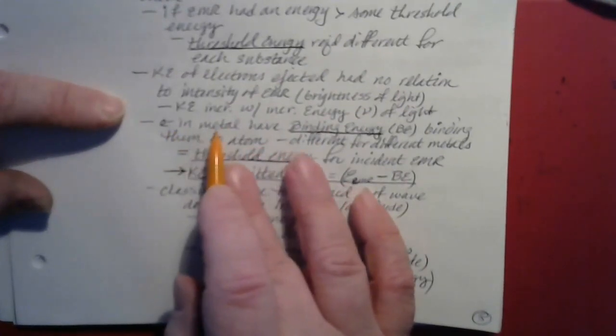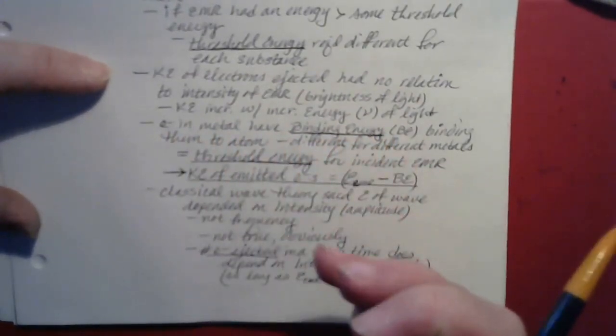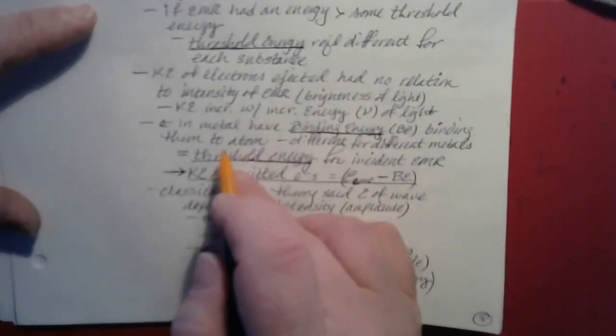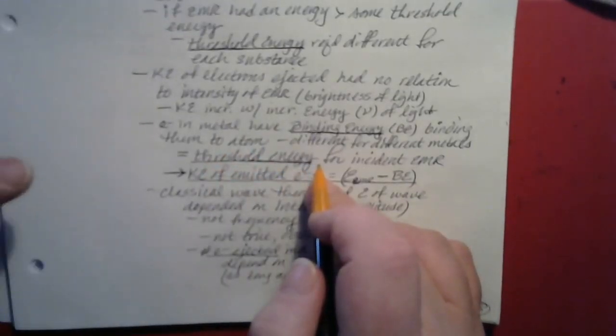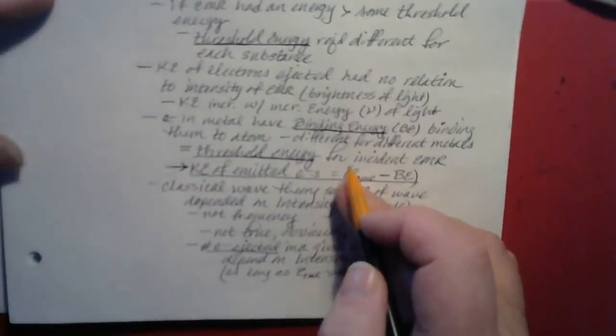This leads to the conclusion that electrons in a given substance — usually metals, but not always — have certain binding energies: a certain amount of energy binding the electron to the atom. In order to get the electron ejected, you have to match that binding energy. The binding energy of the electron is actually equal to the threshold energy — the minimum energy required for electromagnetic radiation to cause electron emission.